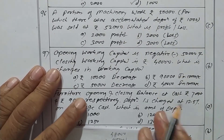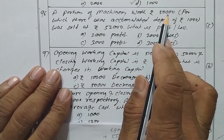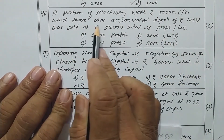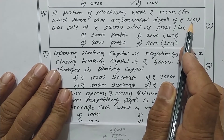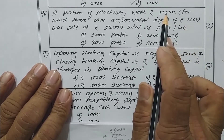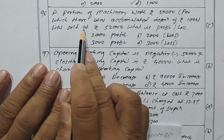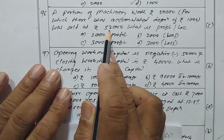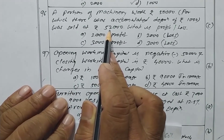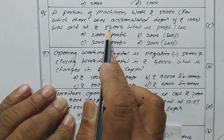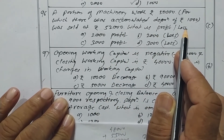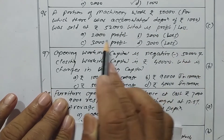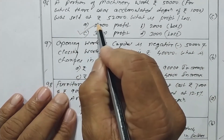A portion of machinery worth rupees 50,000, for which accumulated depreciation was rupees 1,000, giving book value of rupees 49,000, was sold for rupees 52,000. The difference between 52,000 and 49,000 is rupees 3,000 profit. Option C is the correct one.